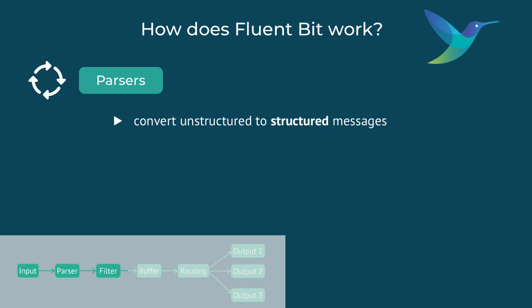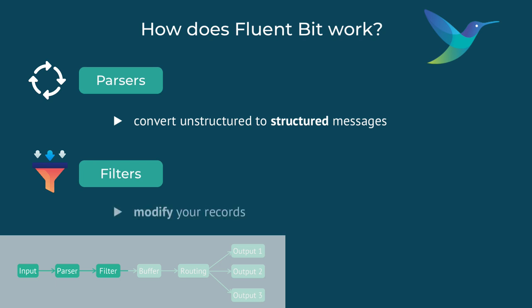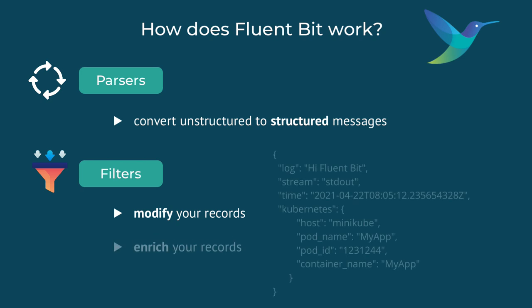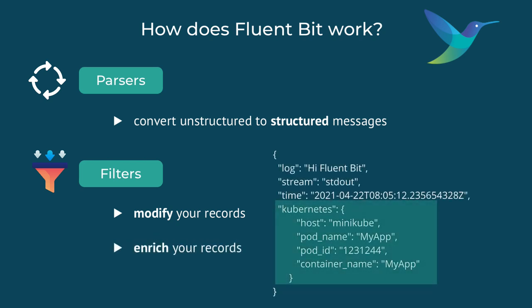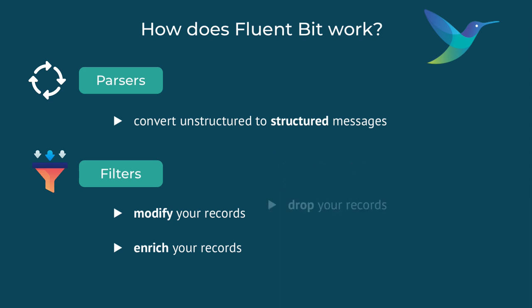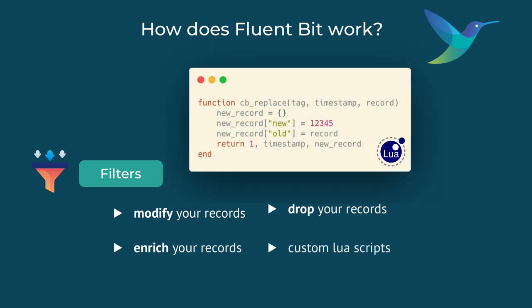For that, FluentBit has different filters and parsers. Filters can be used to change the log record or even add additional metadata to it, like pod ID or namespace where the log is coming from. You can also use filters to drop or ignore some records. To make the filtering even more flexible, you can use custom Lua scripts as filters to modify and process the records.